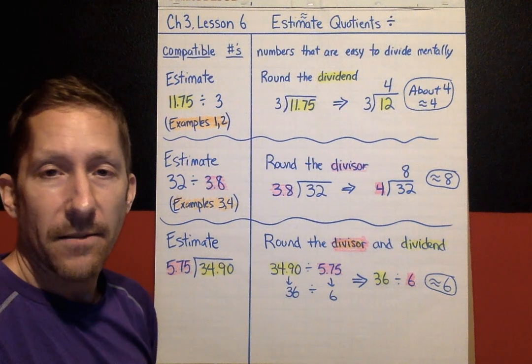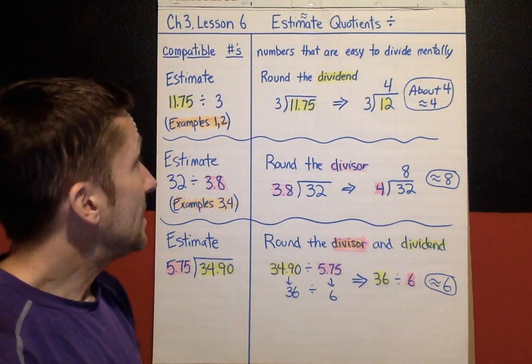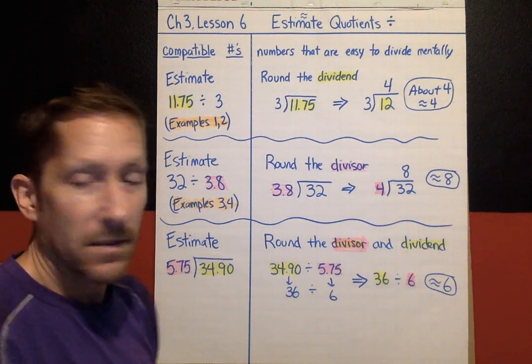We are rounding the dividend, the divisor, or both to make compatible numbers and make a quick estimate of quotients. That is lesson 6 — estimating quotients.